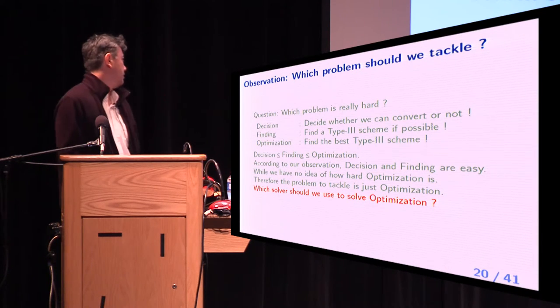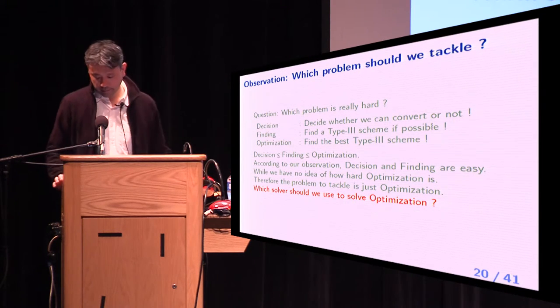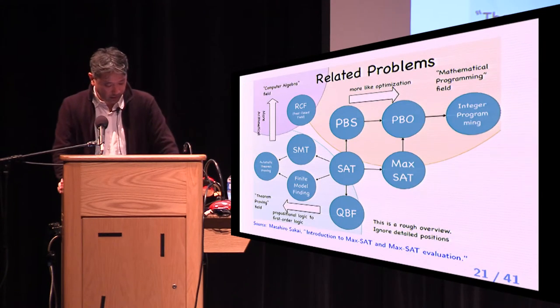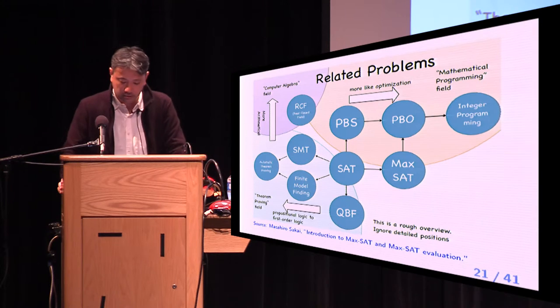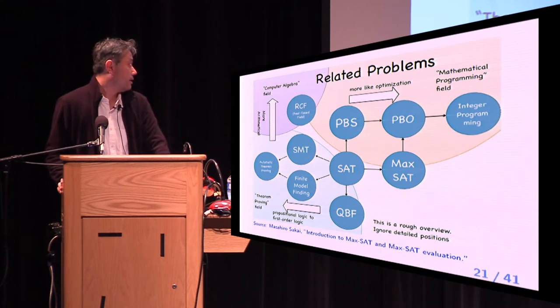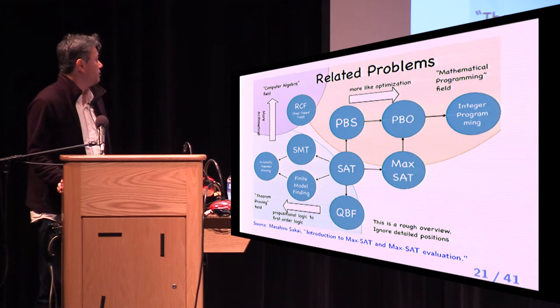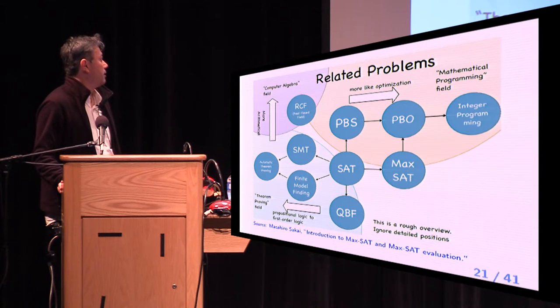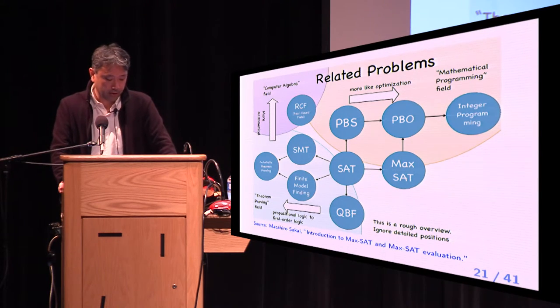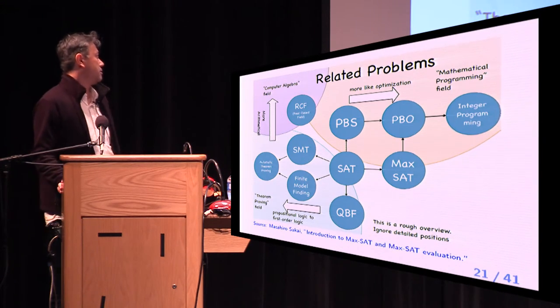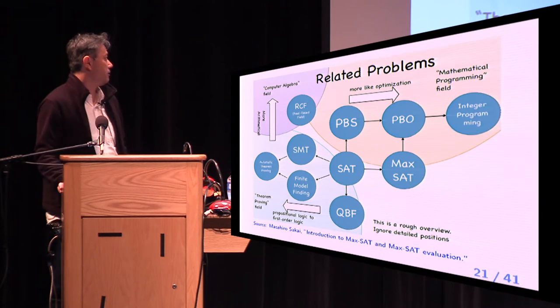Now, we have a new question. Which solver should we use to solve optimization? I drew this picture from a tutorial of certain related problems. There are many SAT related problems. The more to the right, the better for optimization. If we believe this picture, SMT is not so suitable for our problem. Clearly, integer programming is the best one.